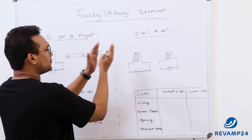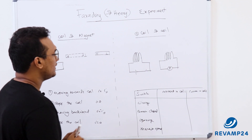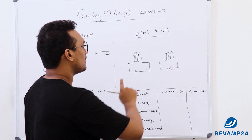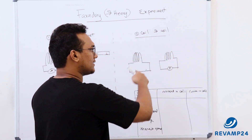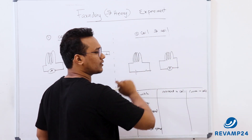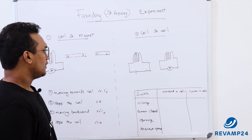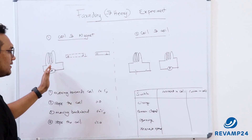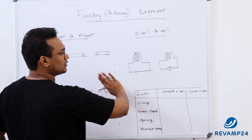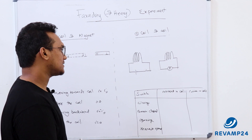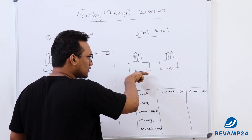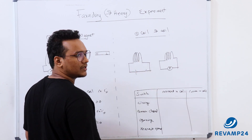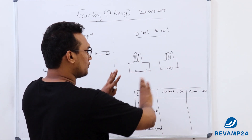In the second experiment, he kept a coil connected with a cell and a switch. Very near to it was another coil connected across a galvanometer. In the first experiment, relative movement caused the current. But here there was no relative movement — he simply closed the switch and took measurements, then opened the switch and took measurements.